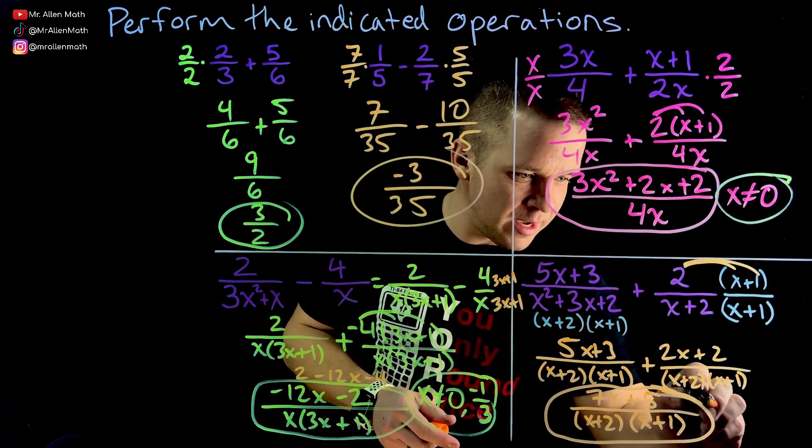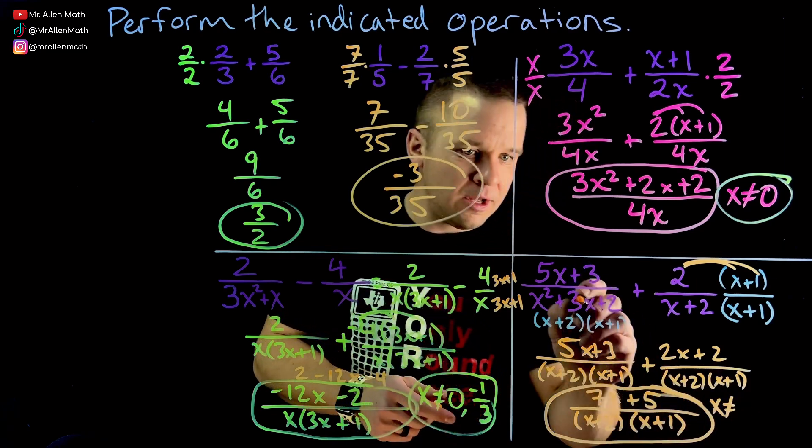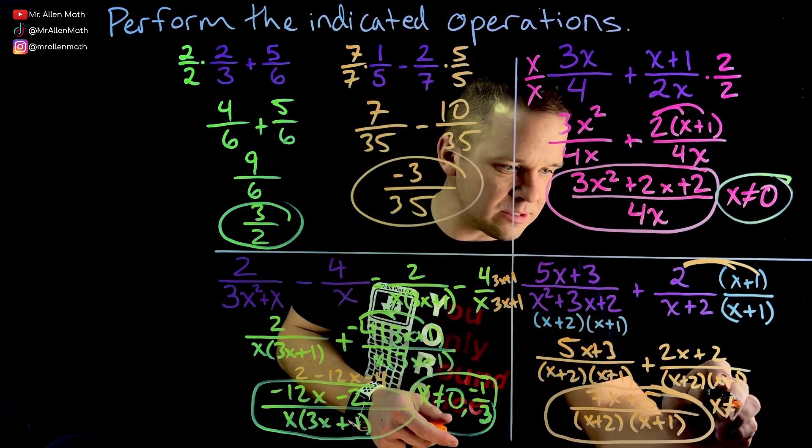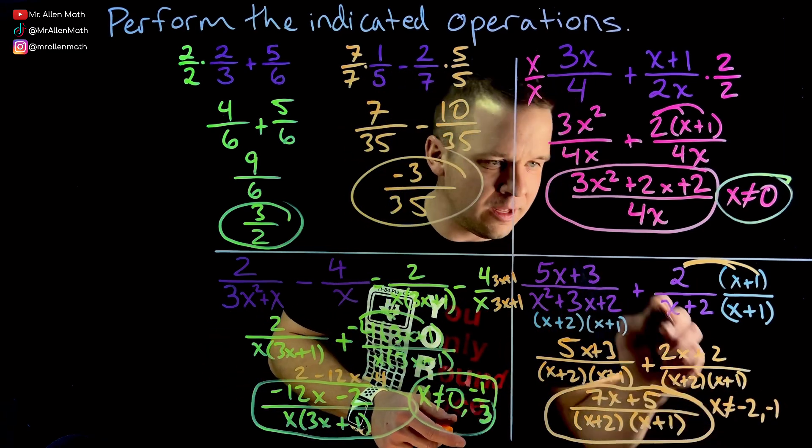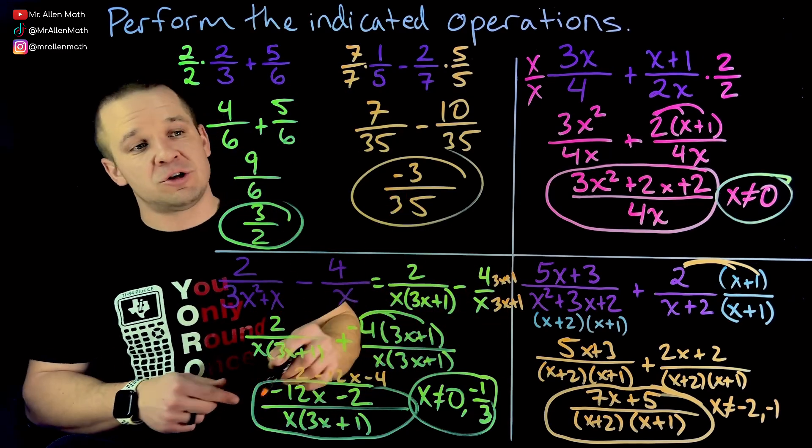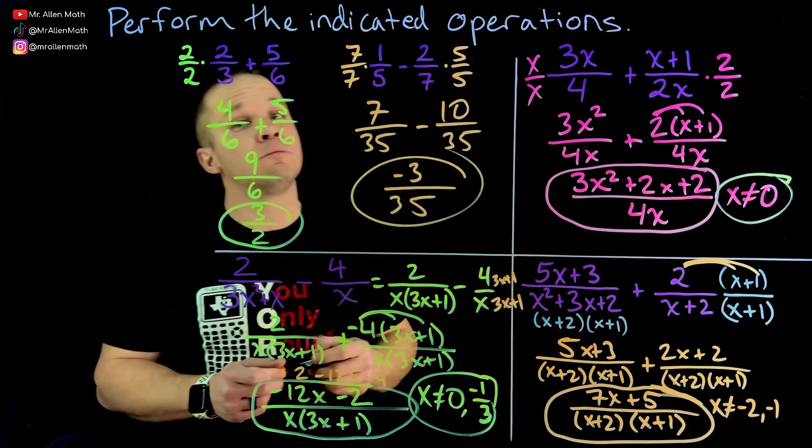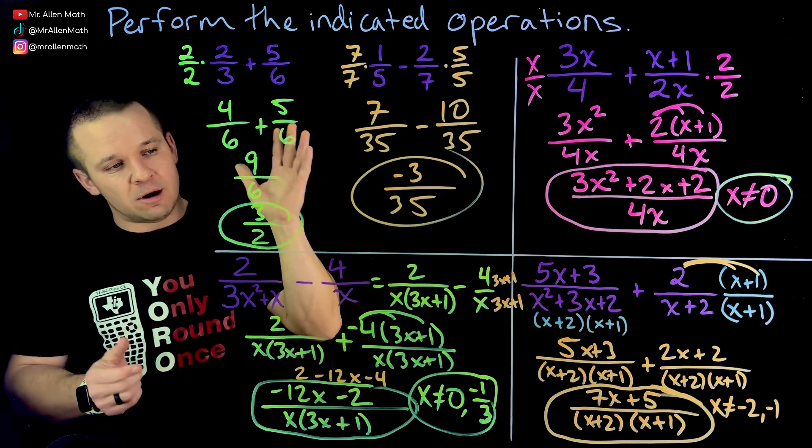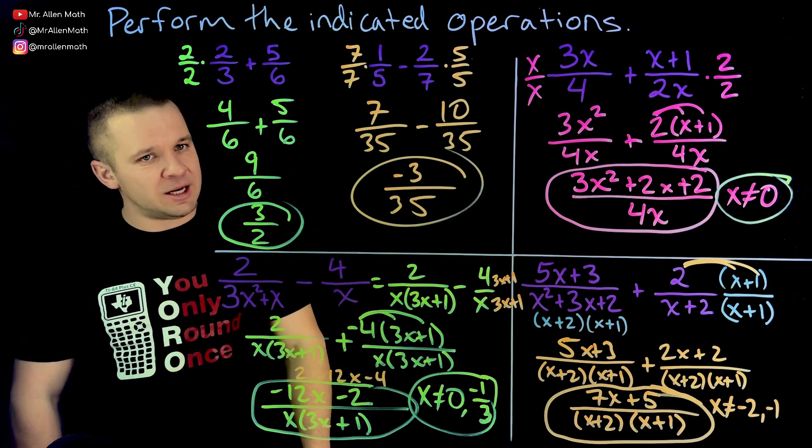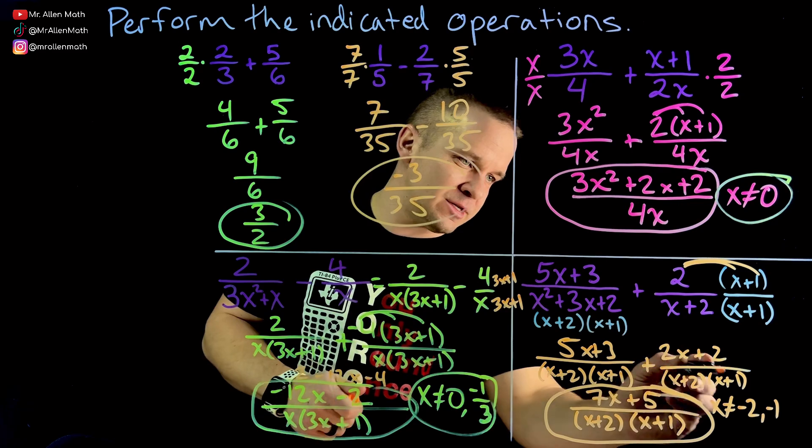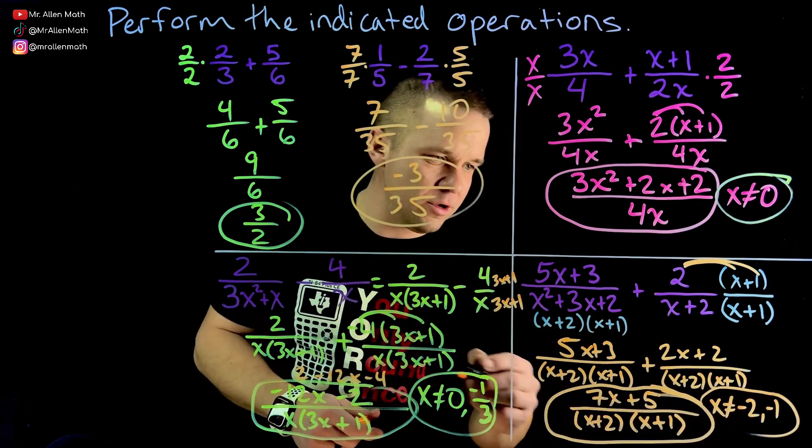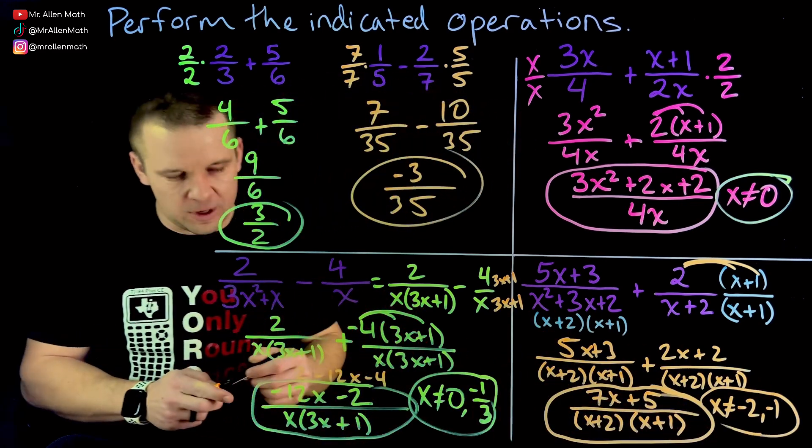And if your teacher asked for domain restrictions, X cannot equal, it'd be these guys right here. That'll tell me. So negative two and negative one, because negative two would make that factor zero makes the whole denominator zero negative one would make the other factor zero, which makes the whole denominator zero boom diggity dope. I feel like I should have circled this. So it's like the others. Cool. Awesome. All right. There we go.